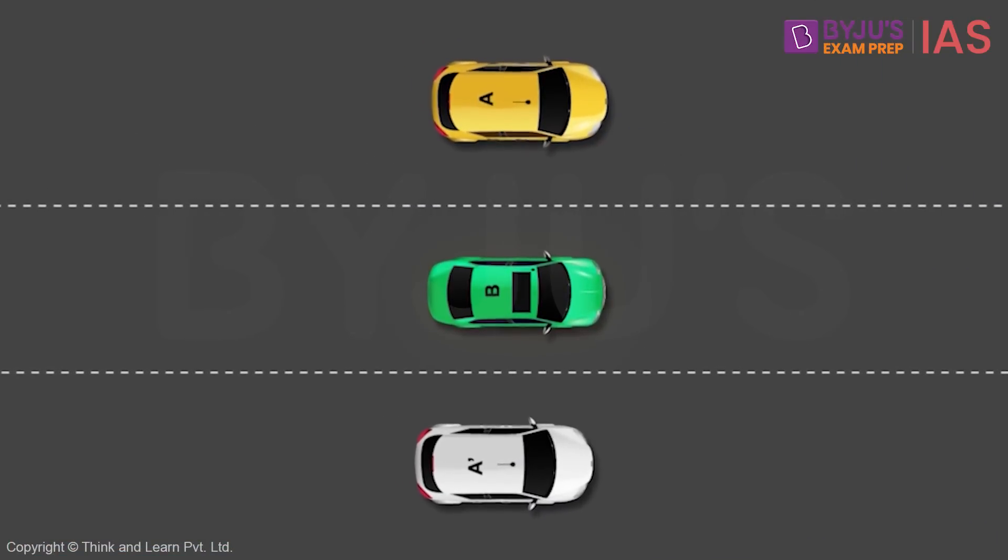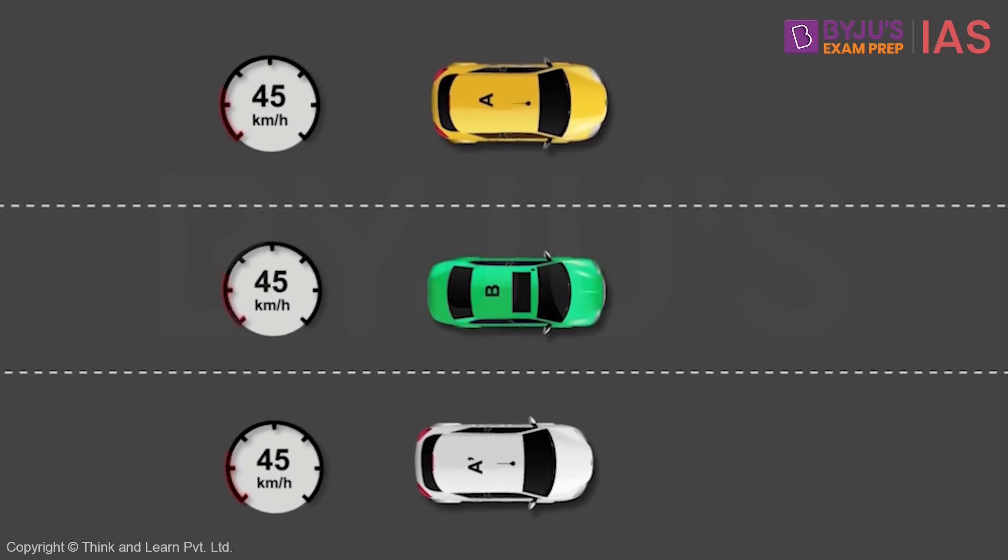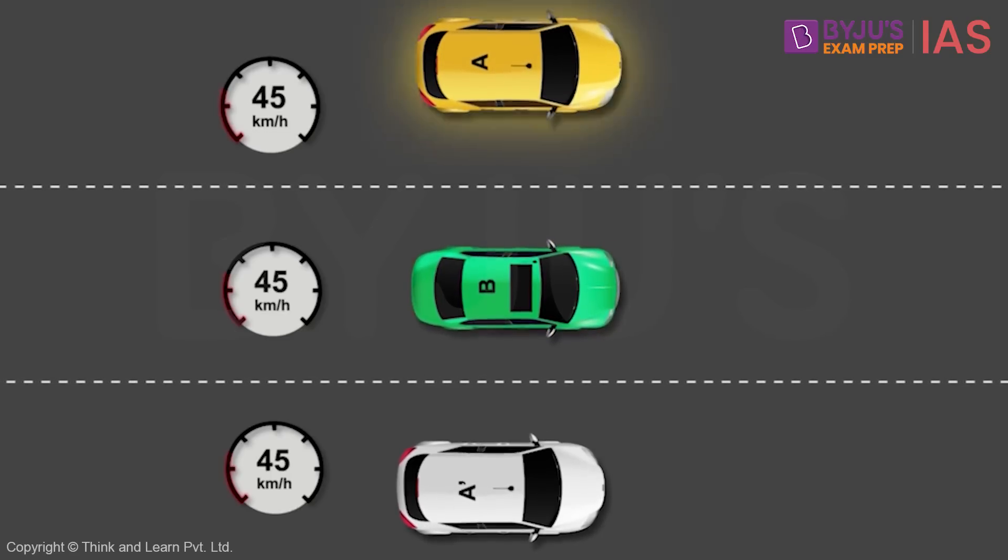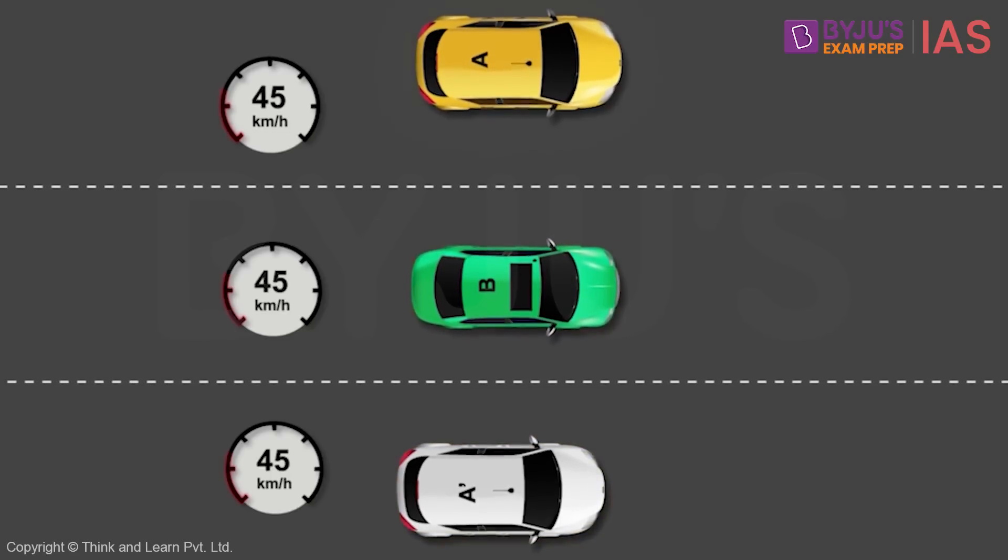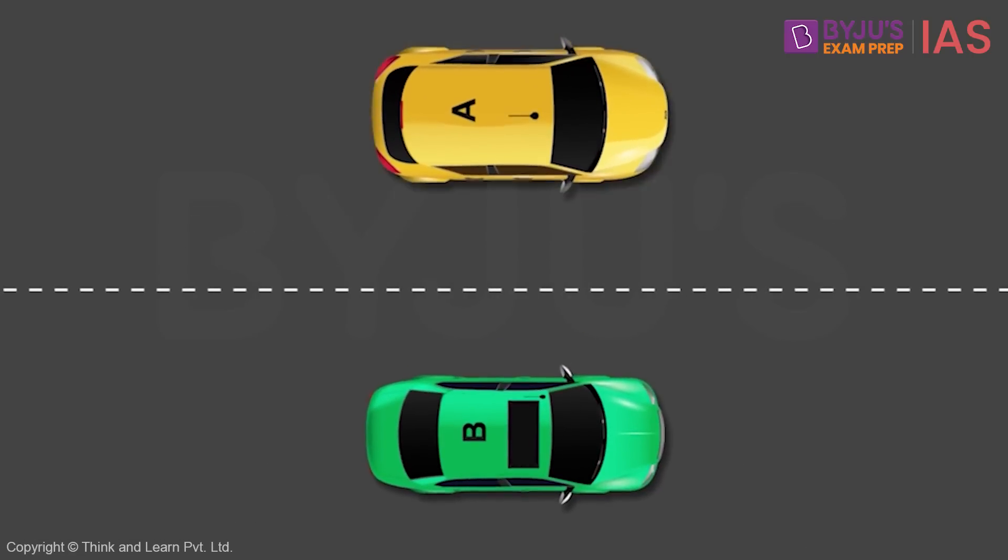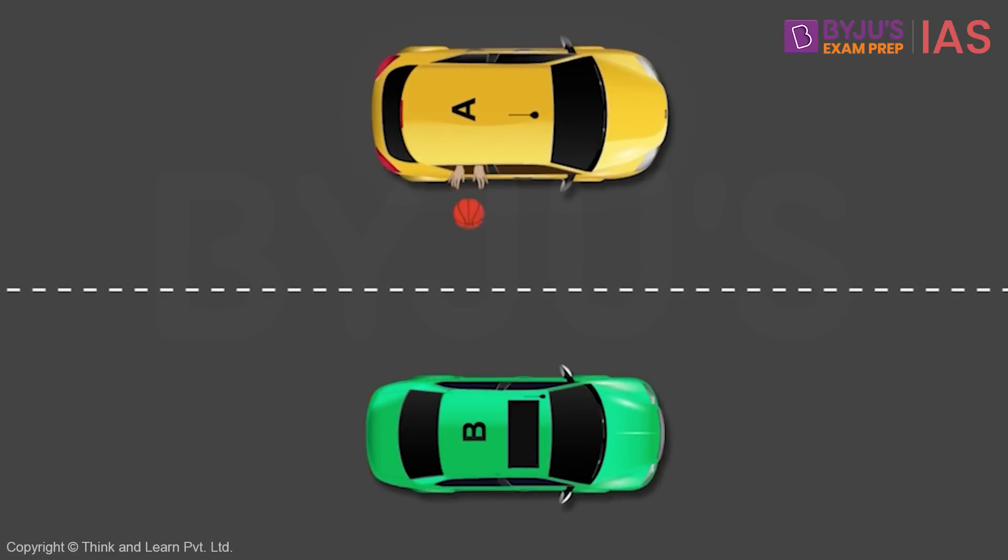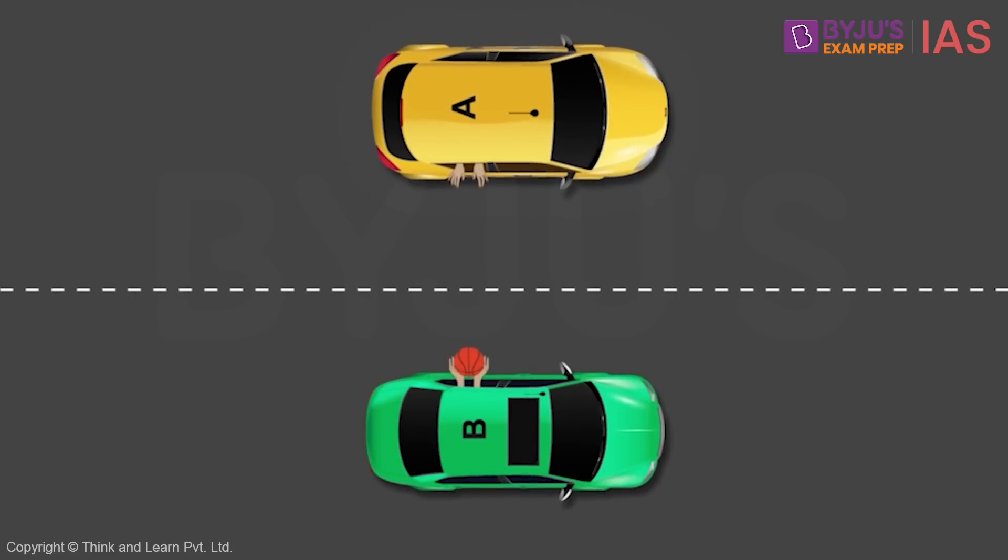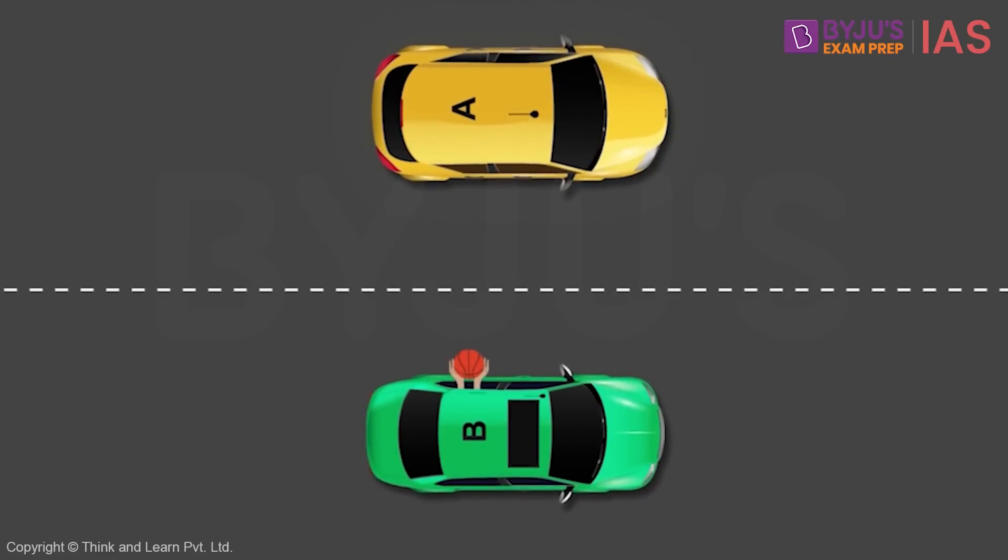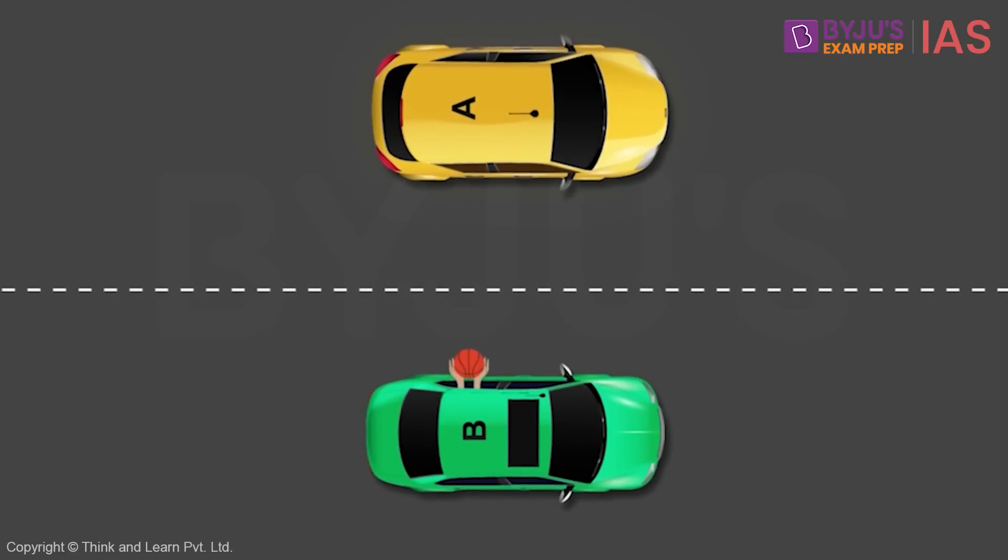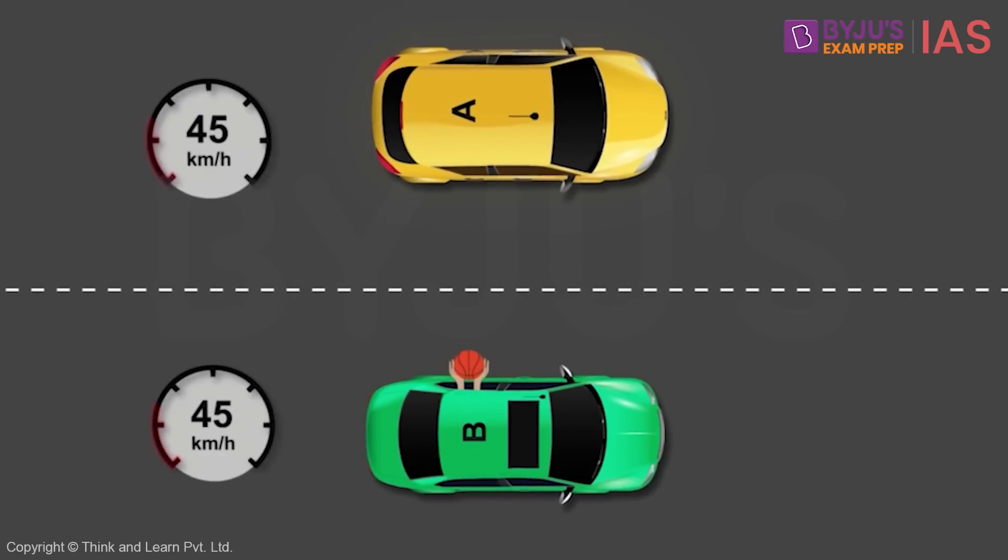Let's suppose we have three cars, A, B and A dash. All the three cars are moving with the same speed. Suppose you are travelling in car B while two of your friends are in car A and A dash. Suppose your friend in car A throws a ball towards you. What will happen? Would you be able to catch it? Yes. Even though you are in a moving car, still you will be able to catch the ball.